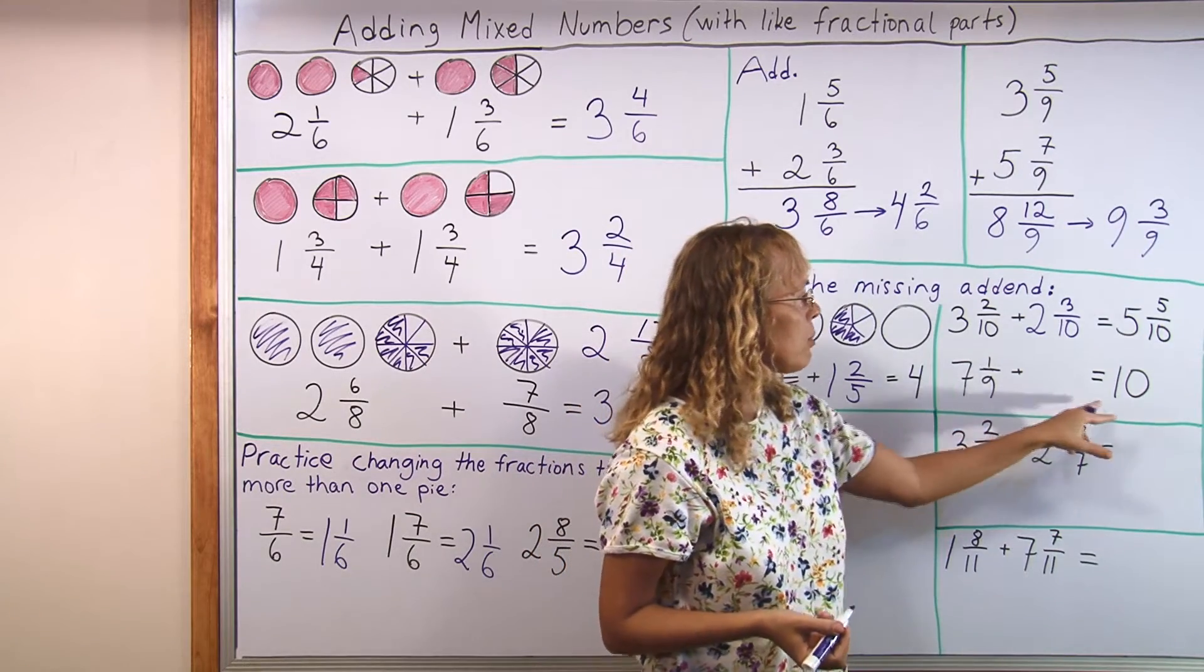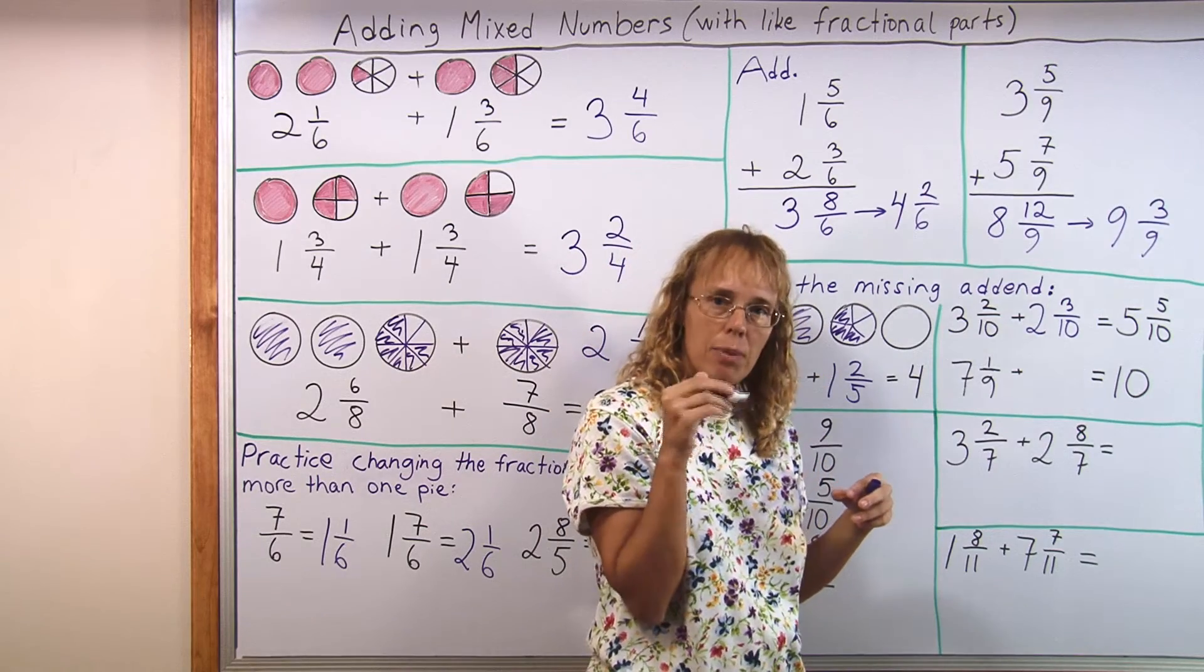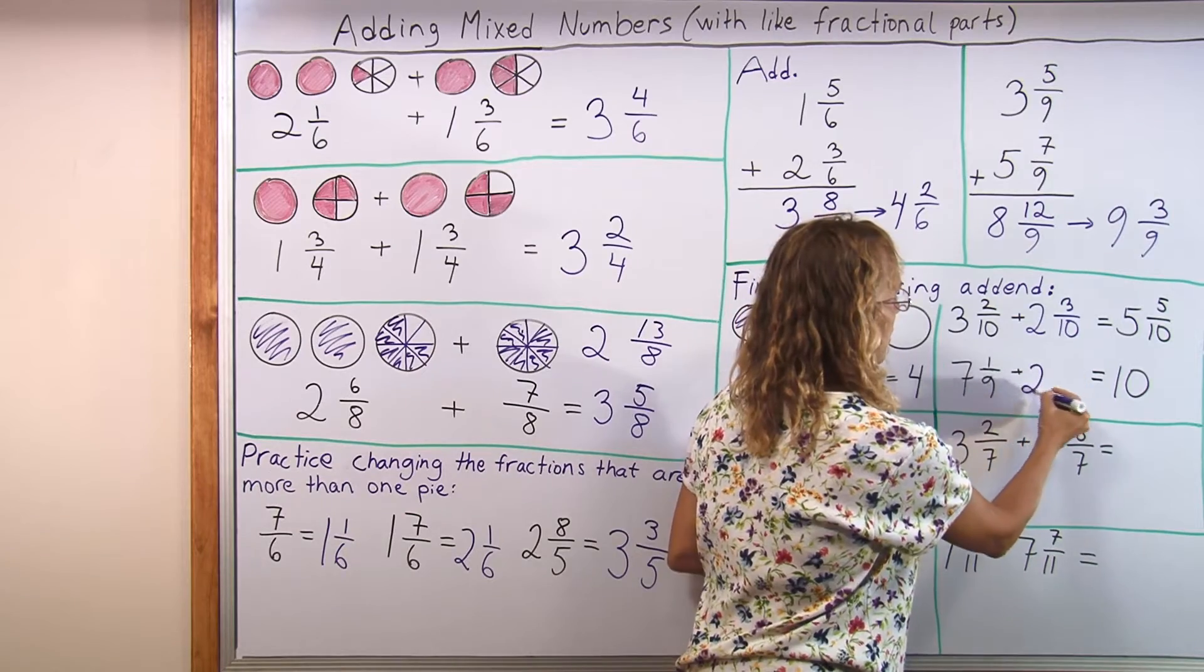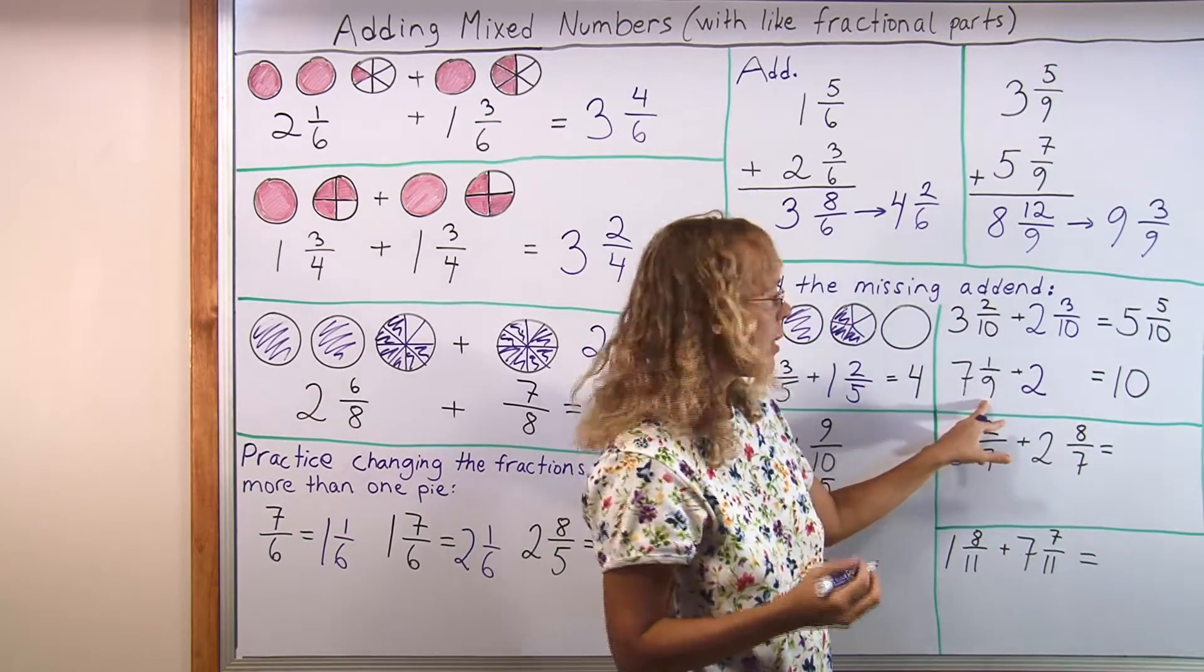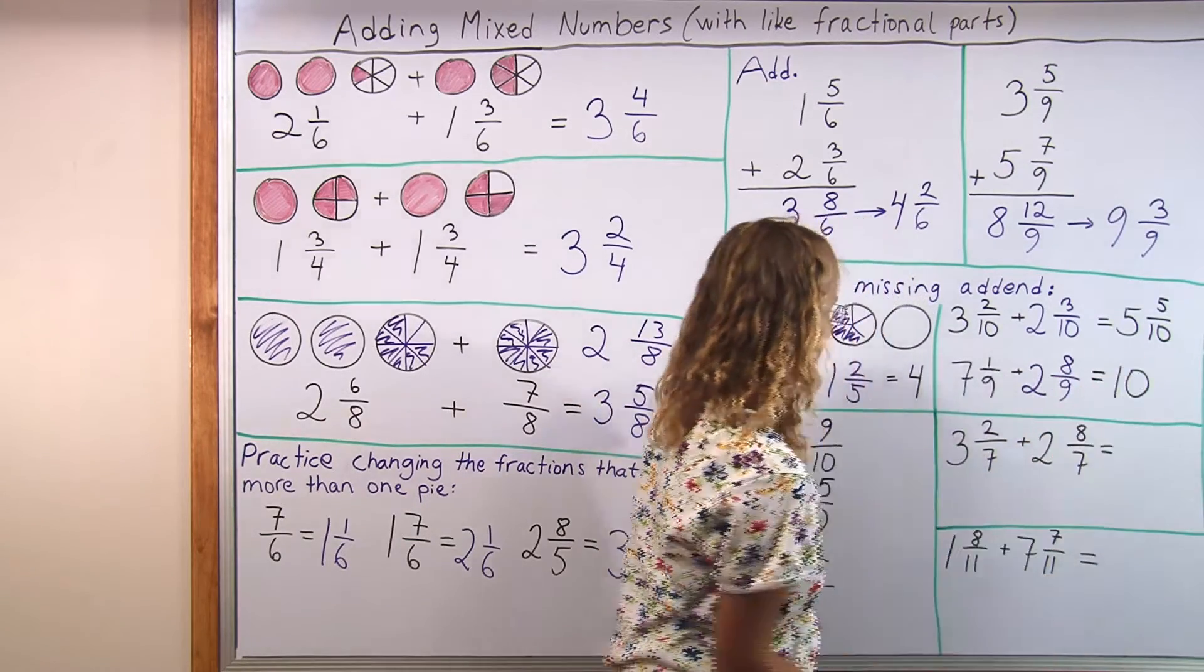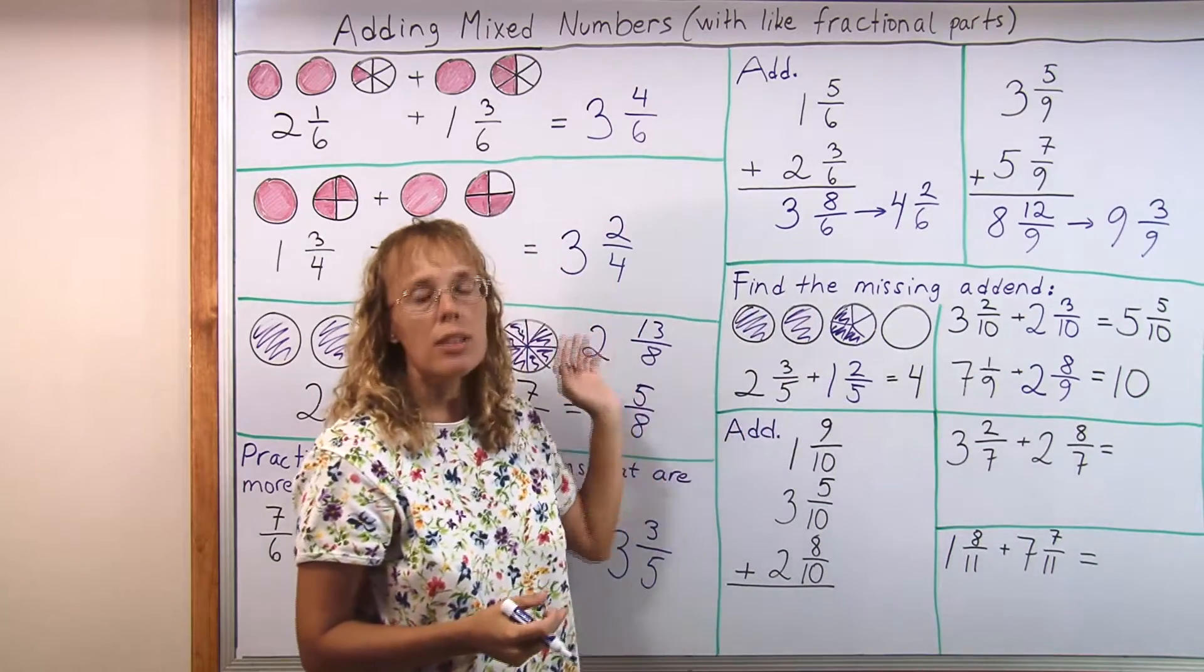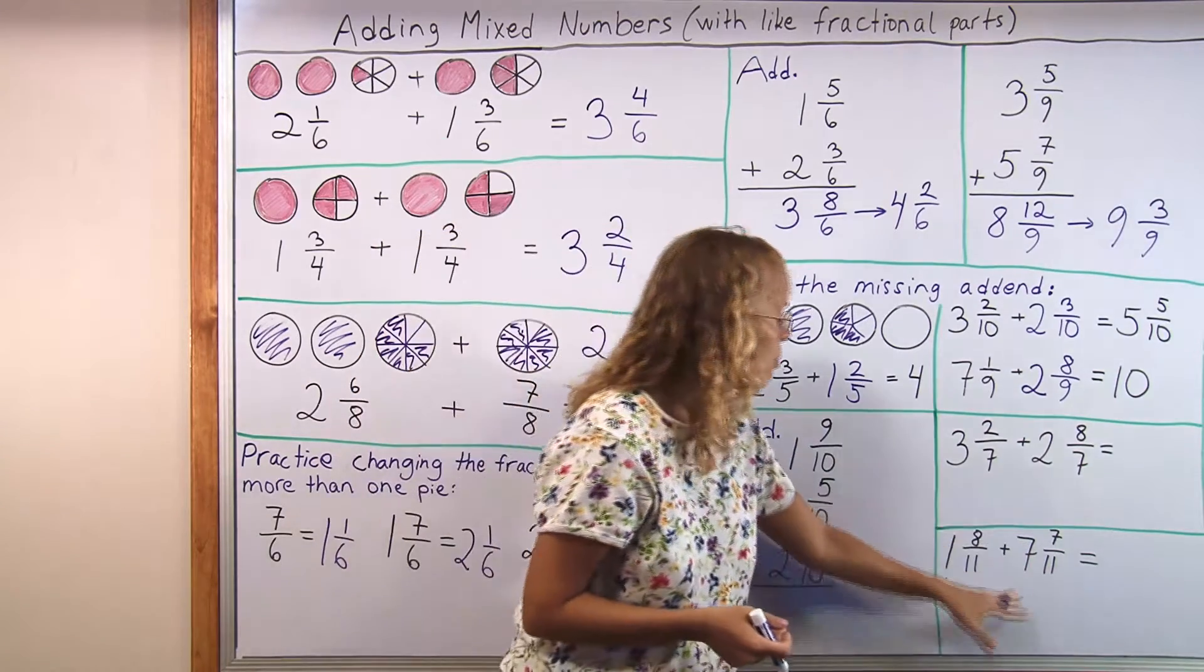Then here 7 whole pies and 1 ninth. And so how much more to add to that to make 10 whole pies? We have 7 pies and the start of the 8th pie, right? So let's add 2 more whole pies. So now we have 9 whole pies. And then we fill this in. It is ninths and one of them colored. So we need to add 8 more ninths.